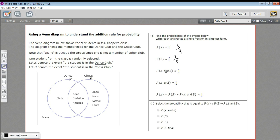Next, we want to compute the probability of A and B. That's the intersection of these two. So these three folks are in both dance club and chess club. So that's three out of nine or one third.